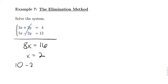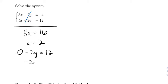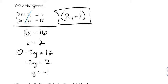So if x is 2, I'll choose the second equation. That means we'll have 10 minus 2y equals 12, subtract 10, negative 2y equals 2. So then y equals negative 1. So the solution, the ordered pair, is going to be 2 comma negative 1.